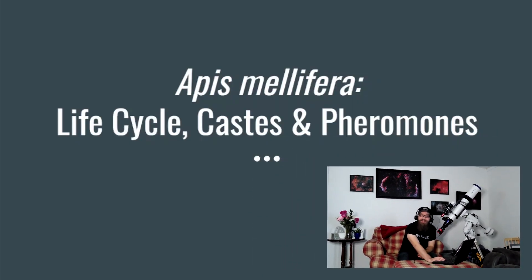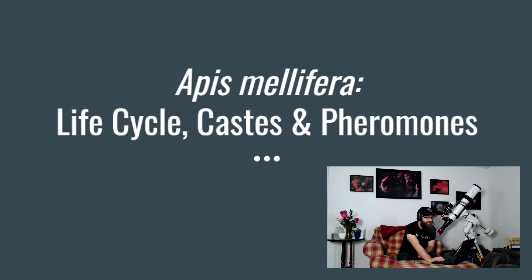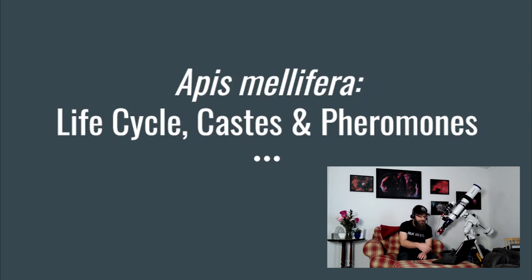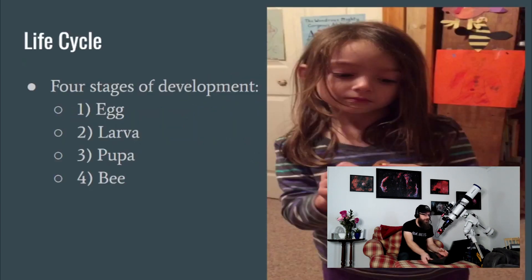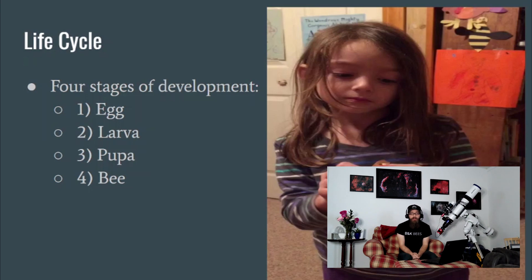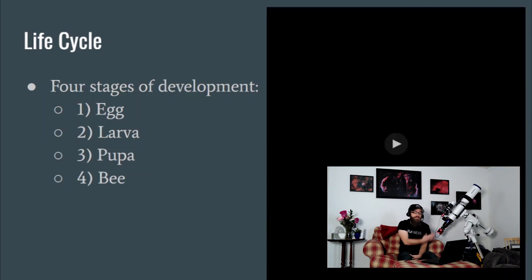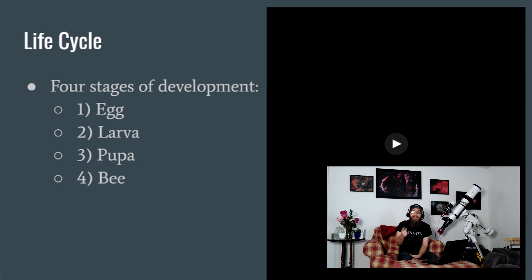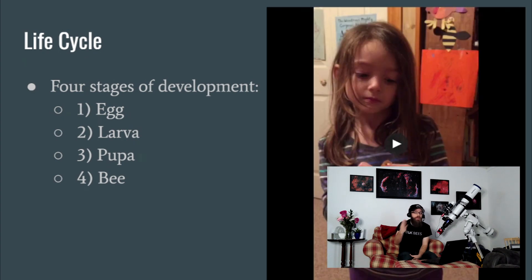I also forgot to mention pheromone communication as one of the three major portions of this presentation — super interesting and super useful, so we'll talk about that as well. The four stages of development for most insects, and for honeybees as well, are egg, larva, pupa, and then the adult bee.